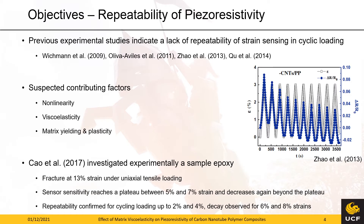This brings us to the challenges of nanocomposites. Recent experimental studies have demonstrated a decay of the peak sensing in cyclic tensile tests, as illustrated in the figure on the right. This behavior was attributed to non-linearities in the sensor behavior, as well as plasticity and viscoelasticity in the matrix. However, other experimental studies did not observe the decay of the sensor sensitivity.